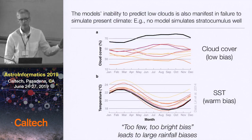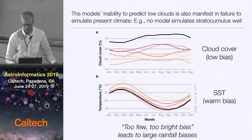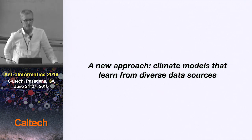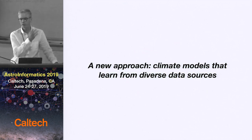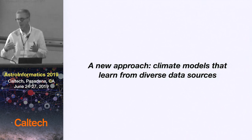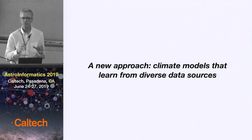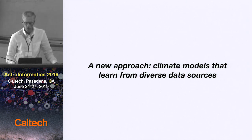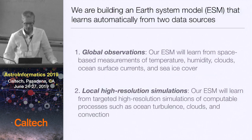We know about the biases, we have data to see them. The question for us is how can we use the data to reduce biases and get models with better predictive capabilities. The way data have been used in climate modeling is mostly: you run a climate model, hold it next to the data, and say it looks bad. Data are primarily used for model evaluation, with very limited use in model development. What we want to do is use all the data we have — massive amounts — broadly and massively in the model development process itself.